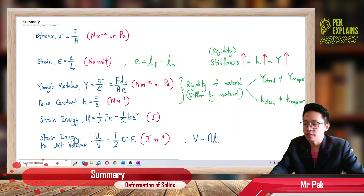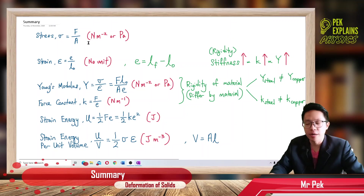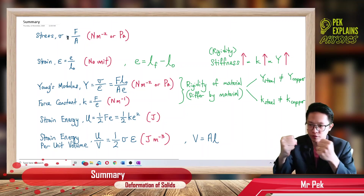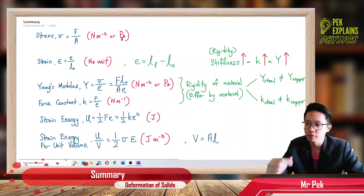So force over area is Newton per meter square or Pascal. Stress, the symbol is sigma, and it has the unit Newton per meter square or Pascal. If you look at this formula force over area, it's the same formula as pressure. That's why pressure also has the unit Pascal. Stress is like pressure experienced by the steel wire under a force for extension. It has the same unit, Pascal.